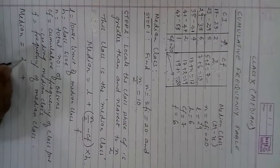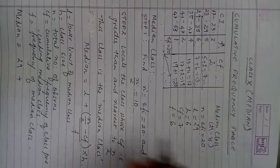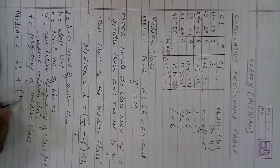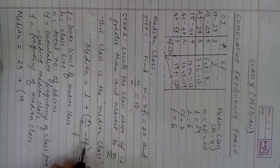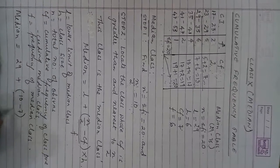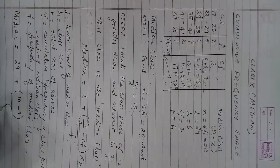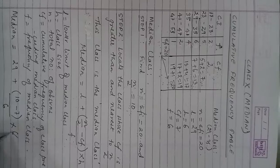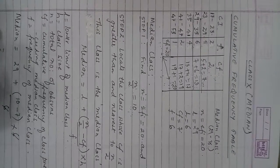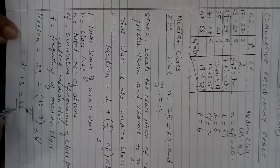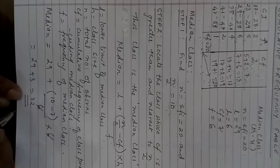Substituting into the formula: l equals 29, n/2 equals 10 (since n is 20), cf equals 7, f equals 6, and h equals 6. The 6s cancel, giving 29 plus 3, which equals 32.